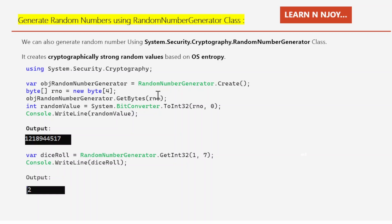Once rNumber is populated, I pass it into System.BitConverter.ToInt32(rNumber, 0), which converts the byte array to an int32 random number, stored in the randomValue variable of int data type. Finally, I print it with Console.WriteLine(randomValue).